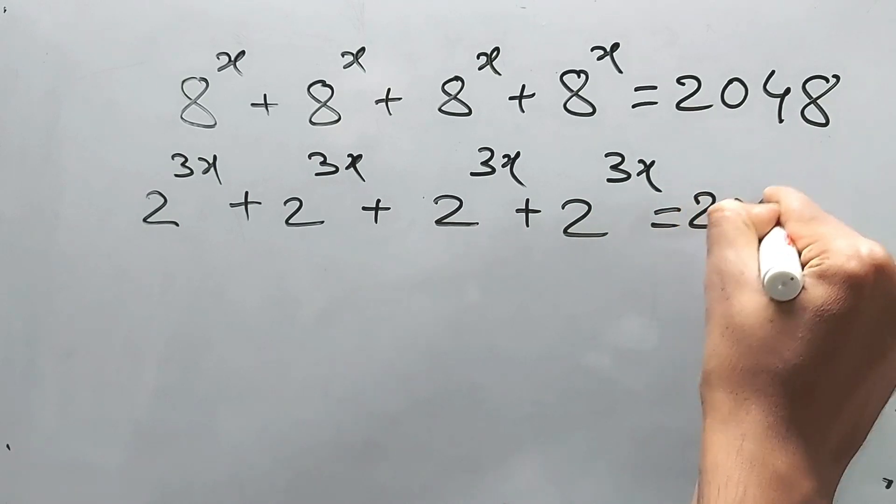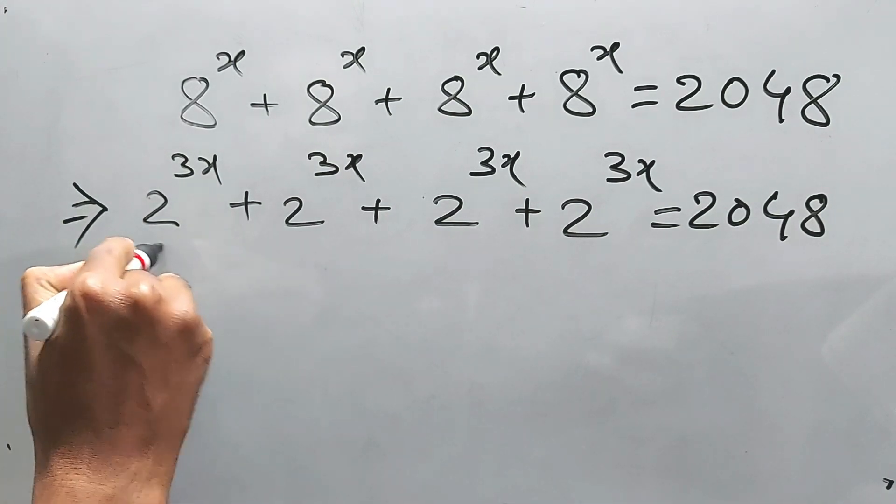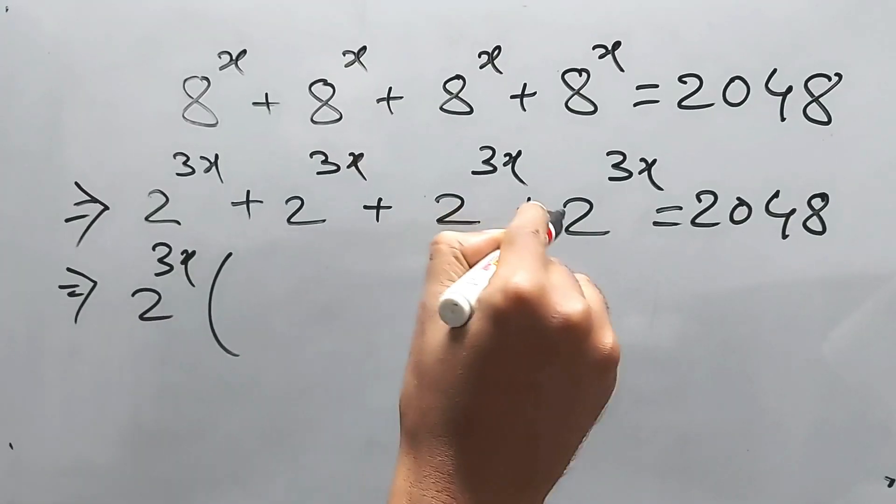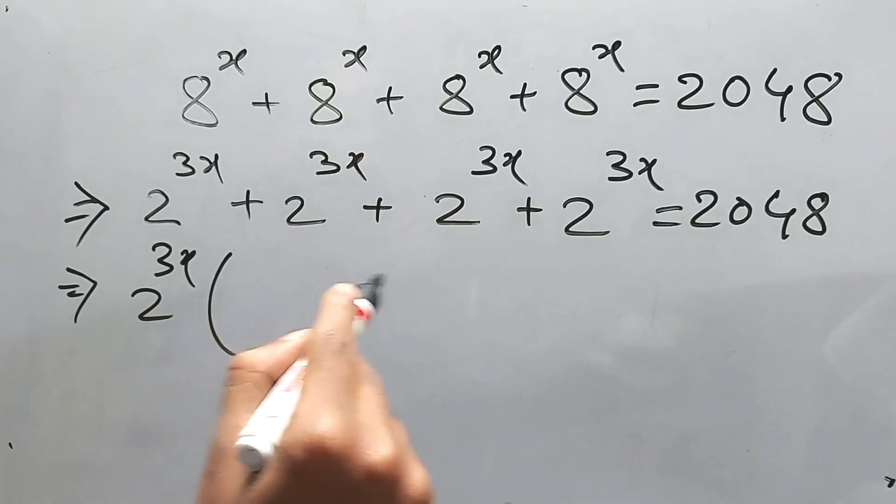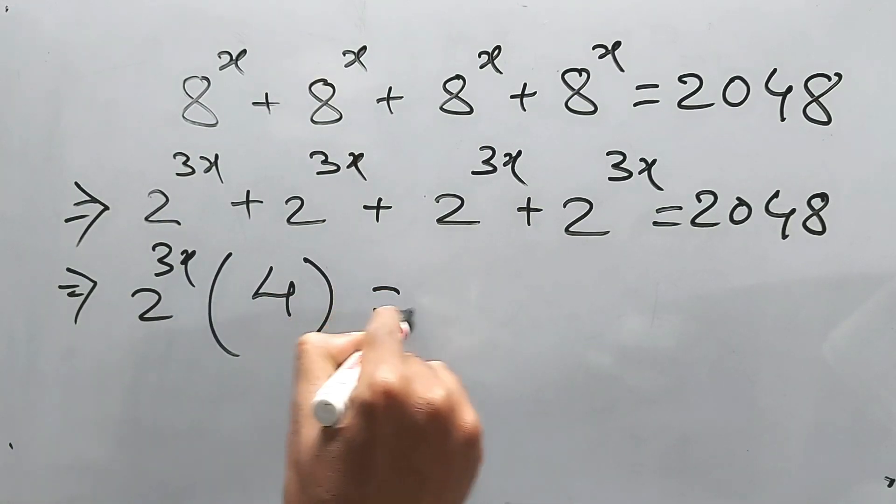Is equal to 2048. Consider it a little more, that will help you a lot. Now see this carefully, there is a common factor and that is 2 to the power 3x, right? And this 1 plus 1 plus 1 plus 1, so 1 plus 1 plus 1 plus 1 is 4, directly I'm writing it.